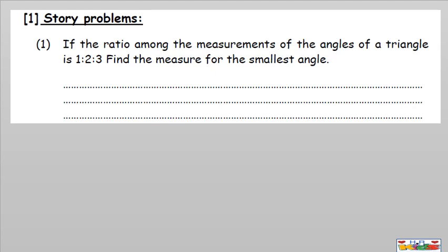Question number one: if the ratio among the measurements of the angles of a triangle is one to two to three, find the measure of the smallest angle. So the triangle has angles with ratio 1:2:3 between its three angles.